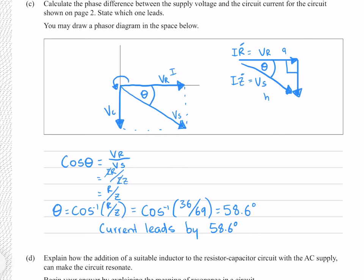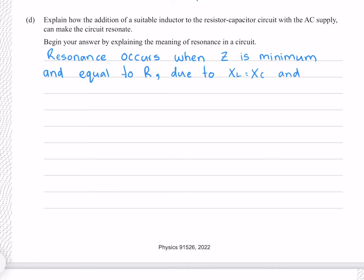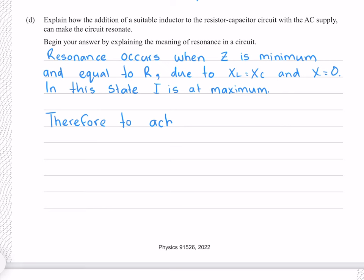It's also worth noting we could have used VC equals IX and the tan relationship to get the same answer. For the resonance question: resonance occurs when the impedance is at a minimum and equal to the resistance, due to the inductor reactance equalling the capacitor reactance and total reactance equalling zero — at this point current is at maximum. Therefore, to achieve resonance the inductor reactance should match the capacitor reactance.